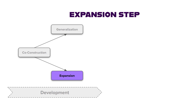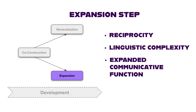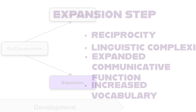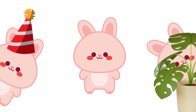In the Expansion step, we focus on promoting reciprocity, building linguistic complexity, further expanding communicative functions, and increasing vocabulary. Jamie had a stuffed animal she loved called Bunny. During the Expansion step, we began to explore expanding vocabulary around Bunny: 'Bunny is at a party.' 'I see Bunny.' 'Bunny is pink.'